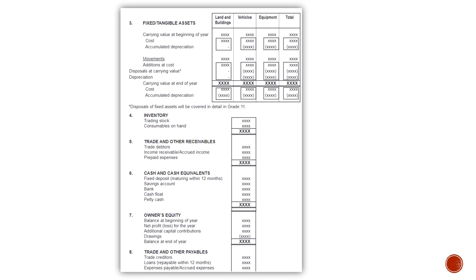Note number five: trade and other receivables. This includes trade debtors, income receivable, accrued income, and prepaid expenses. All of these form part of your trade and other receivables.